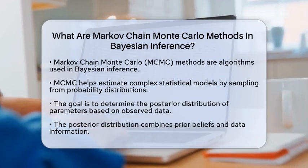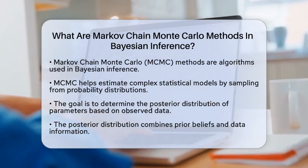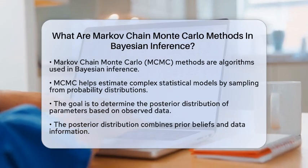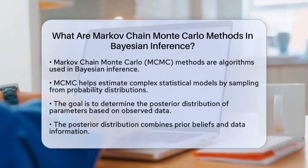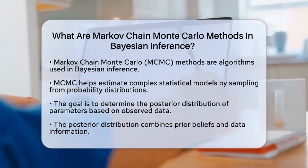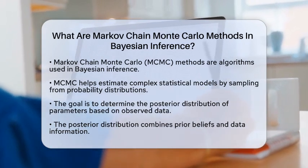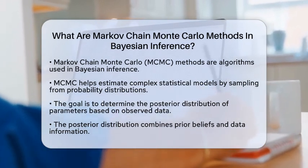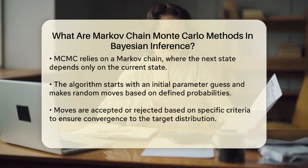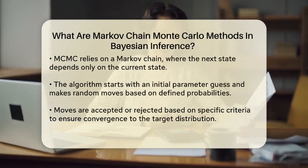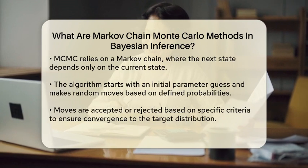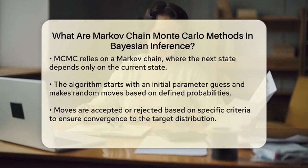At its core, MCMC is a collection of algorithms used to sample from probability distributions. In Bayesian inference, these methods help us estimate the posterior distribution of parameters given some observed data. The posterior distribution is crucial because it combines our prior beliefs about the parameters with the information provided by the data.